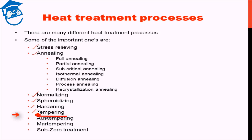Then we have tempering. During martensitic formation there is a lot of internal stress and the hardness of the martensite is very high, thereby the ductility is quite low. Tempering is a heat treatment process used to restore some of the ductility so that the material is in a more usable state.